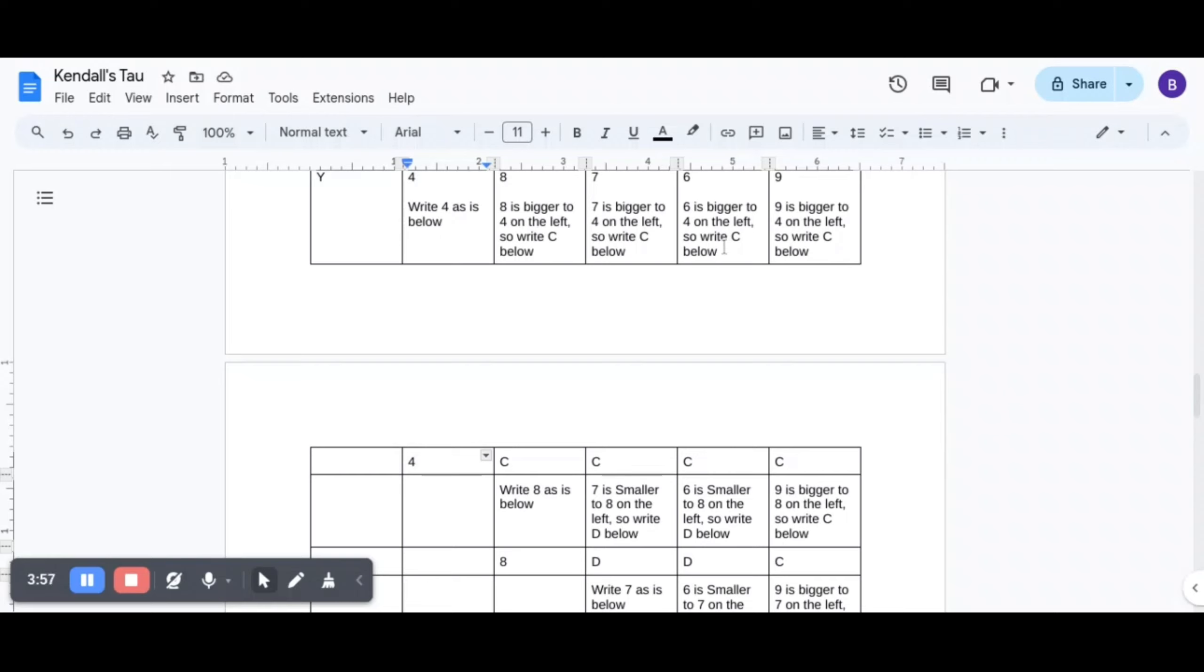And then 6 is smaller than 8. So it will be D. But 9 is bigger than 8. So it will be C.